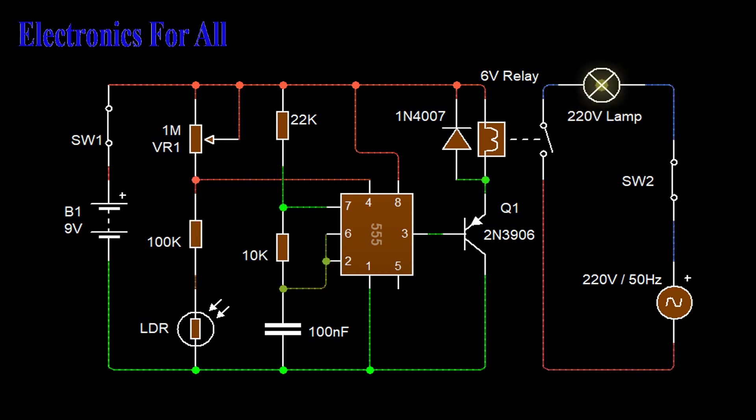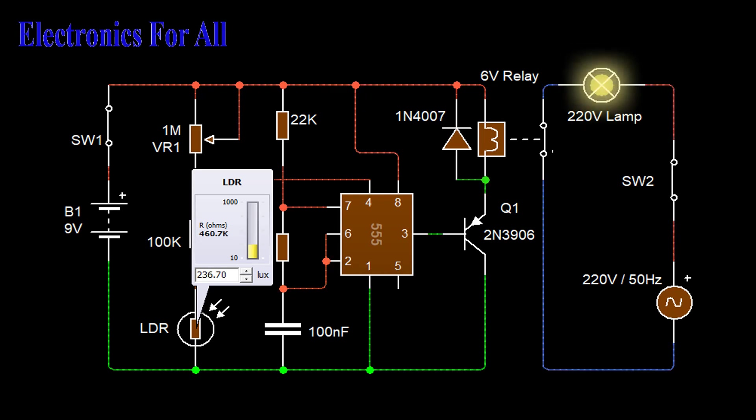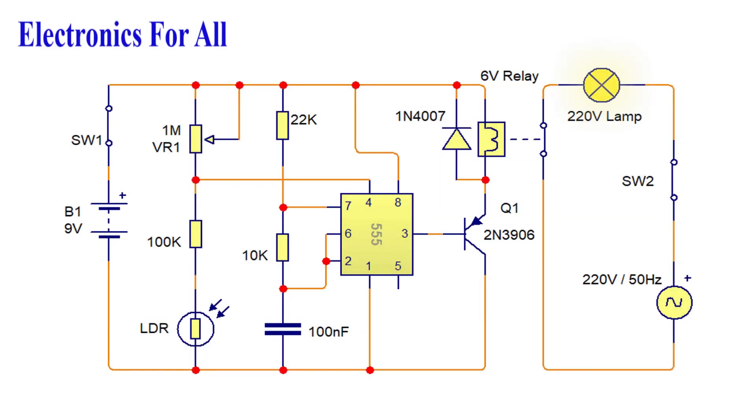Even after adjusting the trim pot the buzzing does not stop. The LDR might have enough resistance to put a potential at the reset pin. Put another 100 kilo ohm resistor in series with 1 mega ohm potentiometer. Check if the reset pin, pin 4, is accidentally connected to plus 9 volt rail in any way.